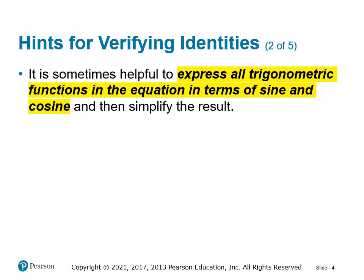A very common strategy is to write all of the trig functions in terms of sine and cosine. For example, if there's a tangent, you would rewrite that as sine over cosine. And then once you've got everything in sine and cosine, use algebra to simplify.